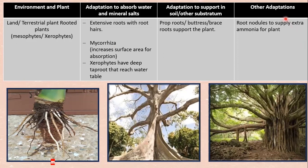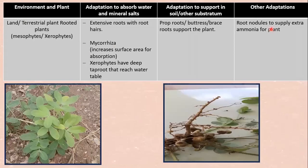We also want to look at other adaptations that roots have in land plants. Root nodules supply extra ammonia for the plants. These swellings are the root nodules, and they are also adaptations of the roots.